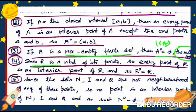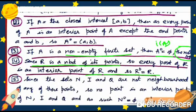Example 4: Since R is a neighborhood of each of its points, every point of R is an interior point of R. Therefore R° equals R — that is, the interior of R is R itself.